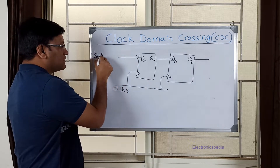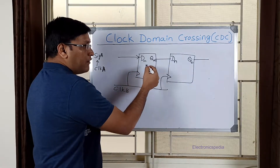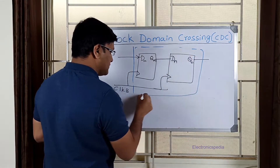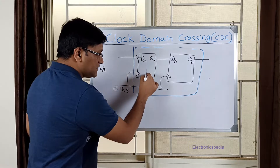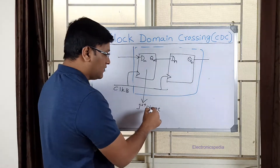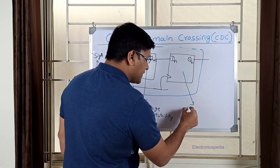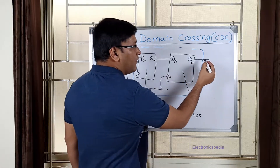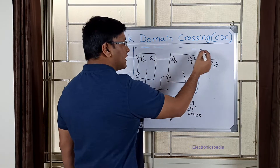When you send a signal from domain A — so my first flop of this two-stage synchronizer is in clock domain B. The first stage of this synchronizer can go into a metastable state. However, the second stage of the flop ensures that the output is free of metastability and will have a proper value — either a zero or a one. This is my output signal from the synchronizer.